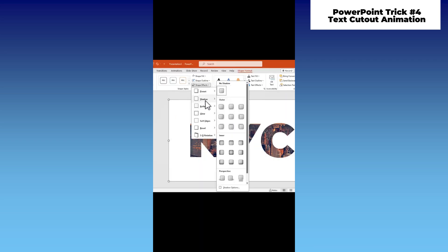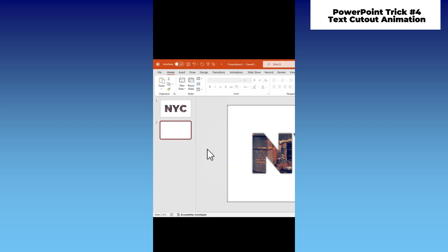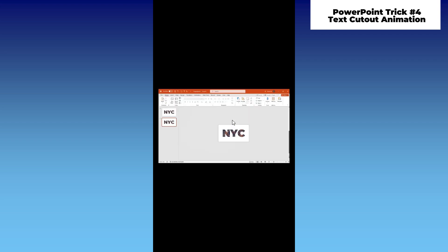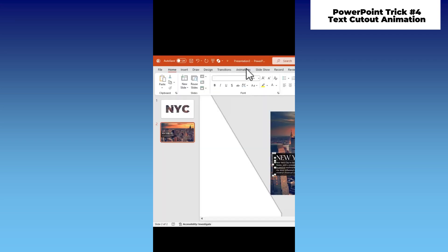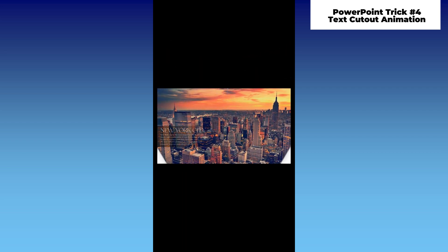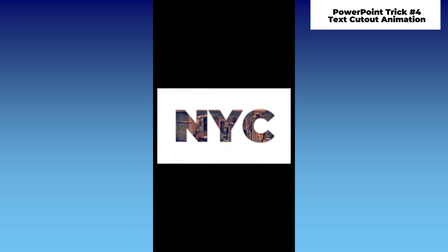Now for the exciting part. Duplicate the first slide, zoom out, then enlarge the shape mask as big as possible until the mask no longer overlaps with the picture. Add your text. Add morph transition. Then boom — a very nice presentation. Follow for more cool PowerPoint tutorials.